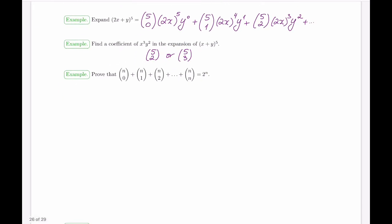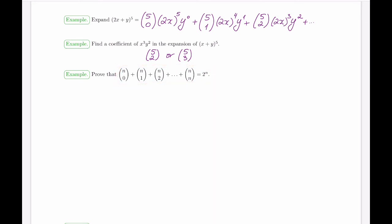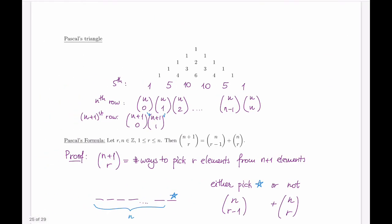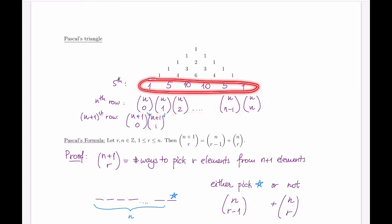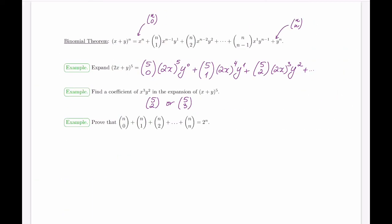The Binomial Theorem is also a great tool for proving identities. One of the most famous: n choose 0 plus n choose 1 plus n choose 2, all the way up to n choose n, equals 2^n. In terms of Pascal's triangle, this says the sum of entries in any row equals 2 to the power of that row number. For example, adding all entries in row 5 should give 2^5, and indeed it does.